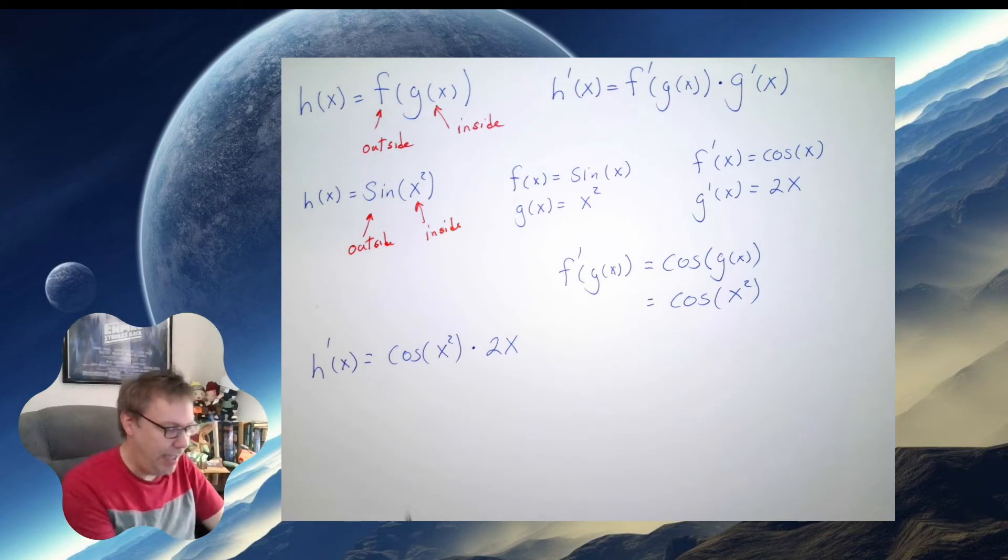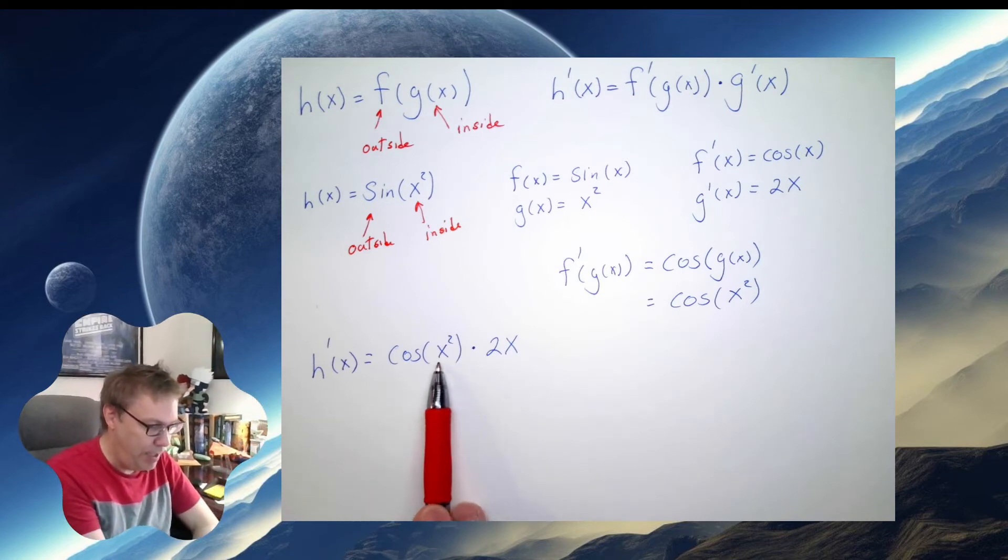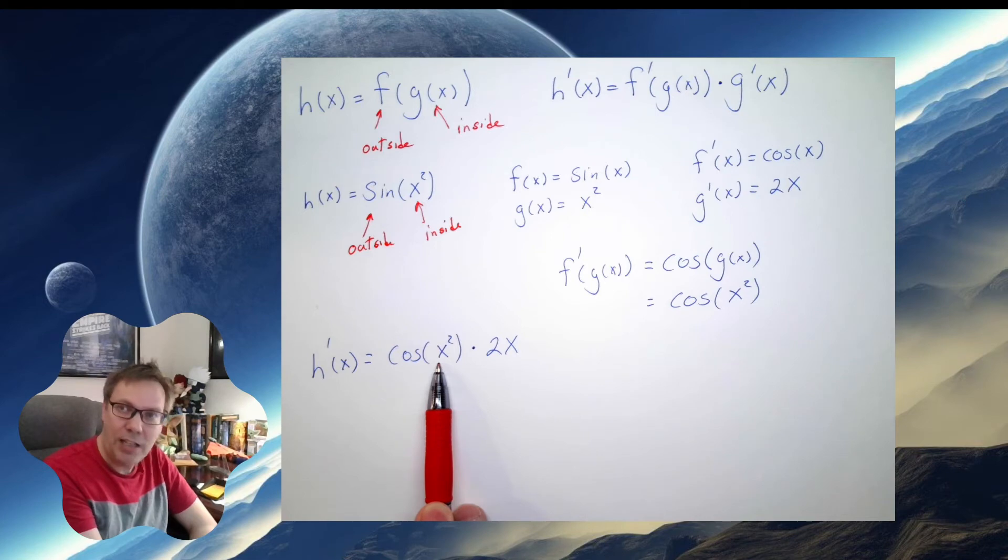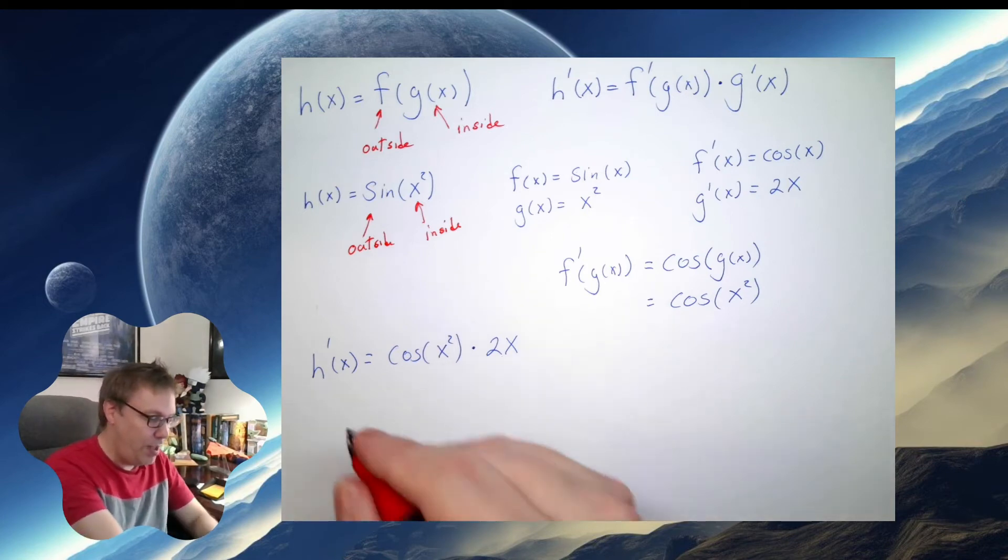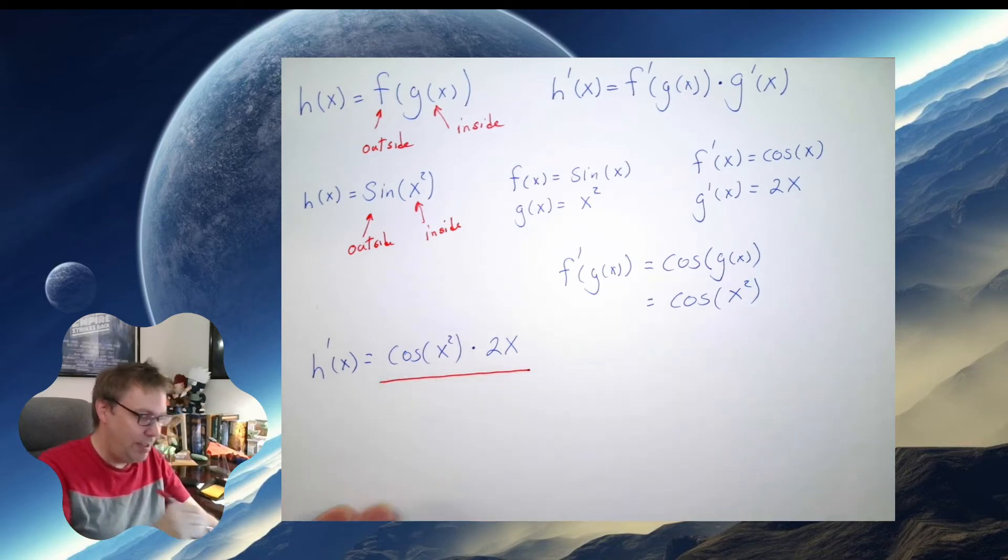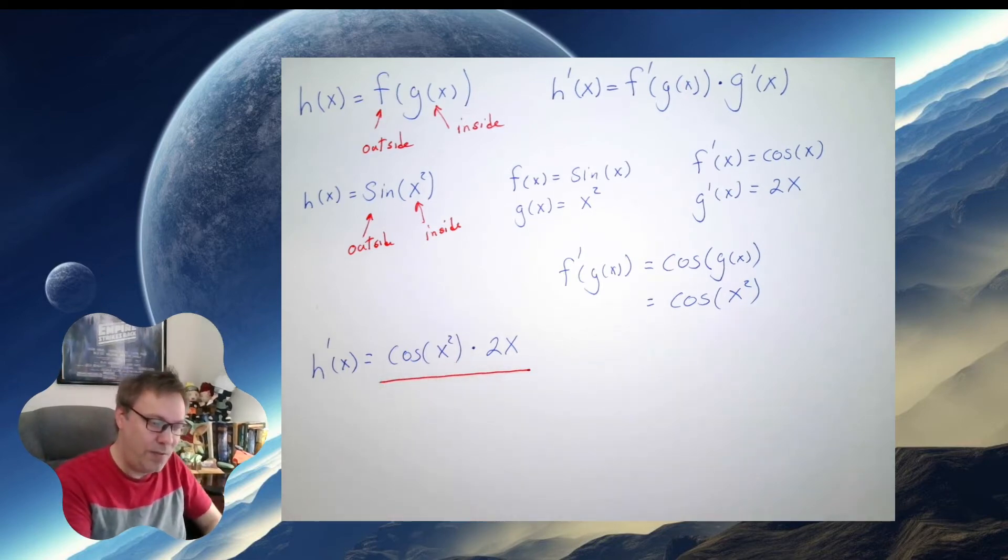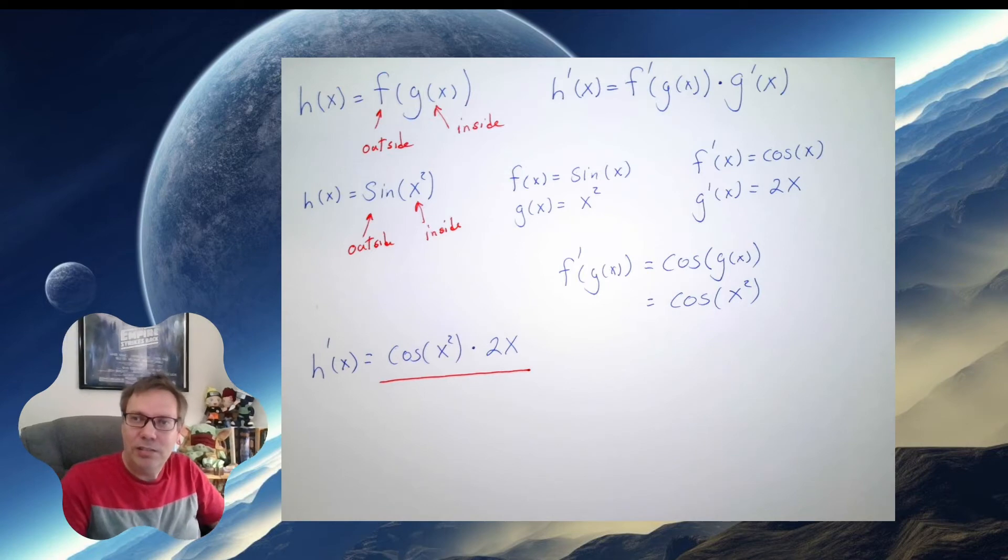So let's go over this again. Take the derivative of the outside, leave the inside alone. That's exactly what this is. Times the derivative of the inside. So this right here is the derivative of sine of x squared. So that's just one example of the chain rule.